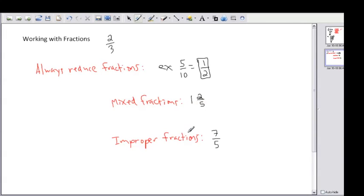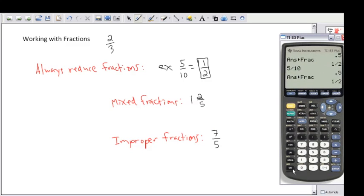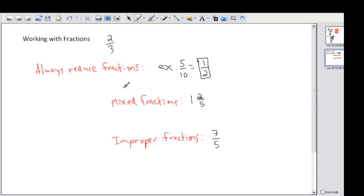Just to prove it always works, you can do it on your calculator. 1 plus, in parentheses, 2 fifths. It's important to be explicit with what you want your calculator to do. Don't let it guess. That's 1.4. If I want to convert that to a fraction, I press math, enter, enter, and I get 7 fifths. So 1 and 2 fifths is the same as 7 fifths.